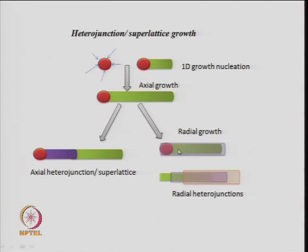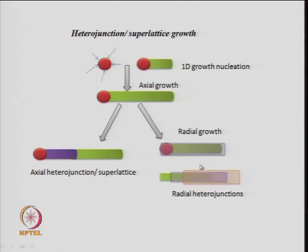If you grow another material along the same axis it is called an axial heterojunction or axial superlattice, whereas if you grow something radially around the nanowire, that is radial growth. The original nanowire material has another material deposited on top like a jacket, which is a radial heterojunction. This can be done several times. Depending on the application, you may want to synthesize an axial or radial heterojunction, and these applications will be discussed later.